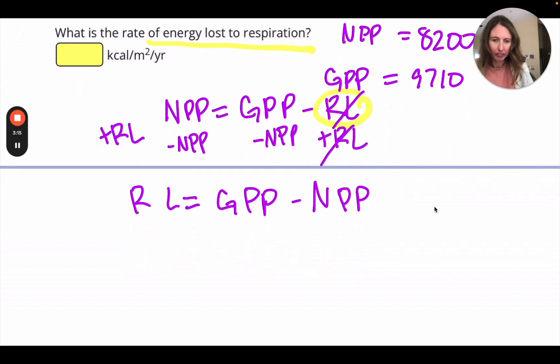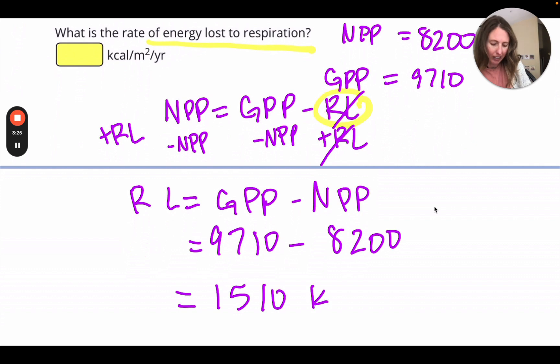And so that will be 9,710 minus 8,200, which is just 1,510 kilocalories per meter squared per year. So let's put that in the box, and I hope that helps.